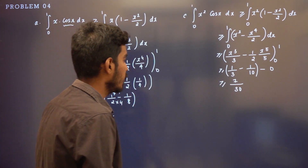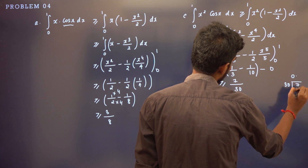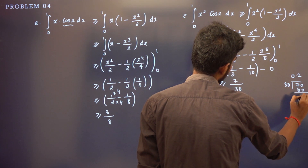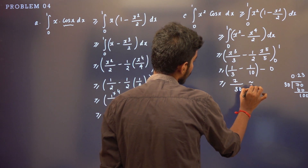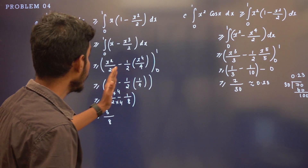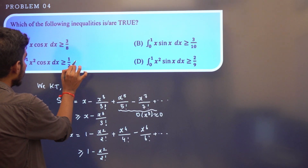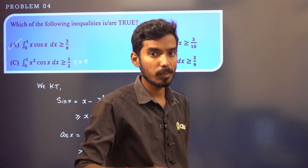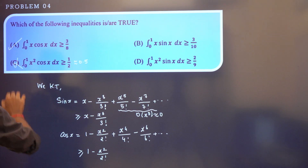So ∫₀¹ x²·cos(x) dx ≥ 1/3 − 1/10 = 7/30, which is approximately 0.23. Checking against the given bound for option C, the option is beyond what is claimed, so option C appears to be incorrect.